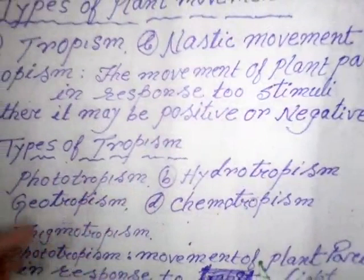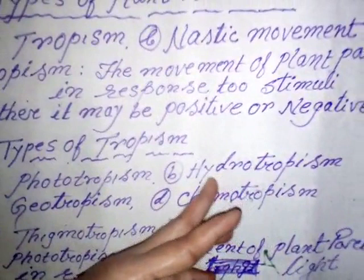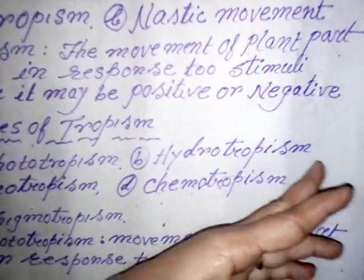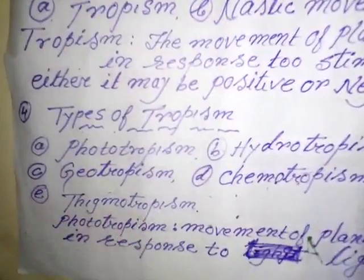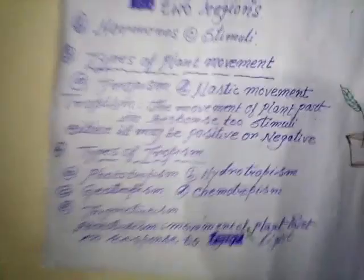Tropic movement may be of different types. One is phototropism — the response of a plant part to light. Next is hydrotropism — the response of a plant part to water. Next is geotropism — the response of a plant part to gravity. Next is chemotropism — the response of a plant part to chemicals. And next is thigmotropism — the response of a plant part to touch.